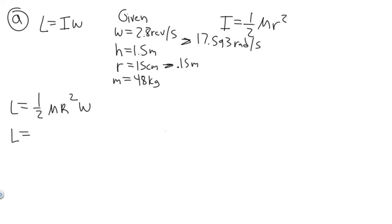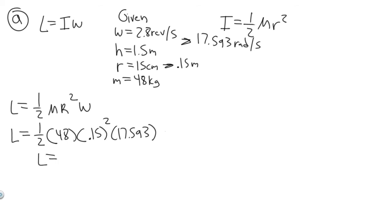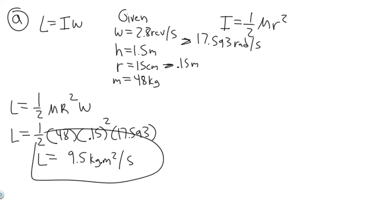Now we can plug everything in. L equals one-half times 48 kilograms times 0.15 squared, multiplied by 17.593. So do 0.5 times 48 times 0.15 squared, then multiply by 17.593. You get approximately 9.5, so the angular momentum is 9.5 kilogram meters squared per second. That's the answer to Part A.